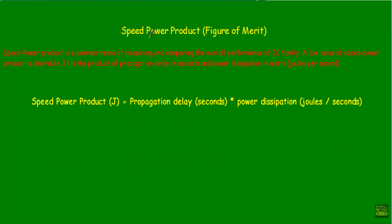Now let me talk about speed power product. It has another name: figure of merit. The figure of merit is a term used to define or describe the overall performance or efficiency of a system. Therefore, the term speed power product is very important to understand the operation of a logic family.